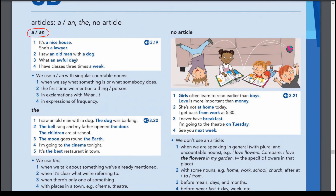We use 'a' or 'an' with singular countable nouns — we can't use 'a' or 'an' with plural nouns. The first use is when we say what something is or what somebody does, so when we talk about a job: 'I'm a teacher,' 'she's a lawyer,' 'he is a nurse.' 'A' or 'an' gives the meaning of one — not a specific one, a general one.